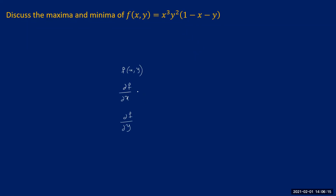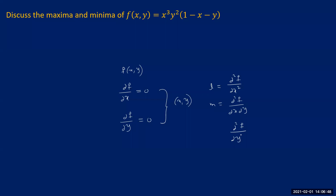After getting these two derivatives, to find the stationary points we equate both derivatives to zero, and by solving these two equations together we get several pairs of values for x and y. Then at each pair of values we evaluate the second-order derivatives. We call ∂²f/∂x² as L, ∂²f/∂x∂y as M, and ∂²f/∂y² as N.